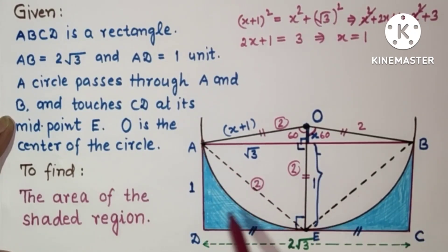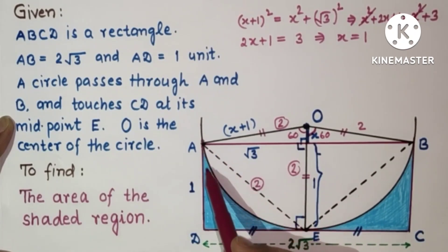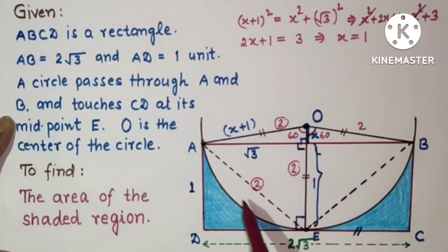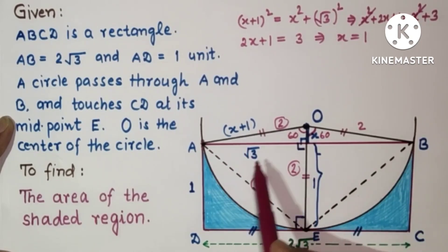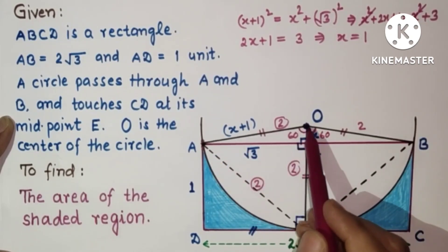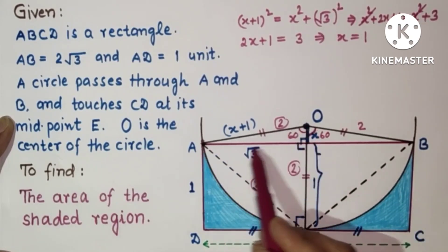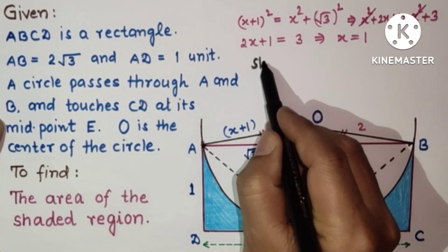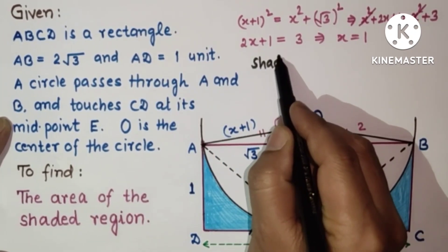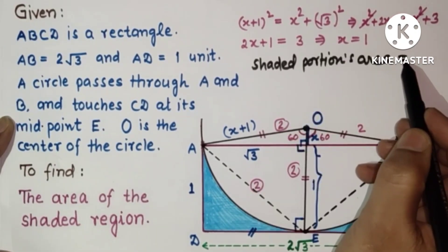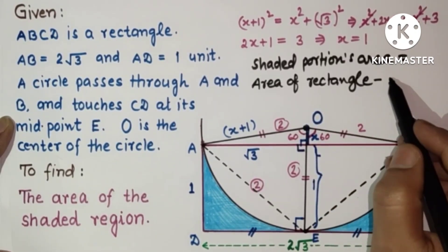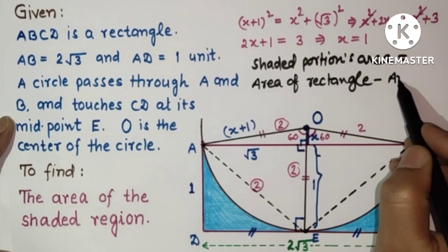The required shaded portion's area equals the area of the rectangle minus the area of the segment. The segment area equals the area of the sector minus the area of triangle OAB. So: shaded area = area of rectangle − (area of sector − area of triangle OAB).